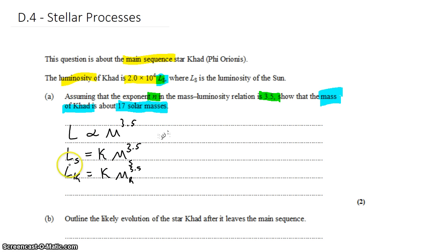And what we can do from here is divide one side by the other. Because they're equations, this side is equal to that side. When we do that division, K cancels, and we get to say that Ls on Lk is ms on mk to the 3.5 power.